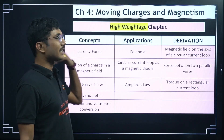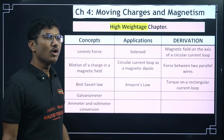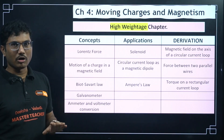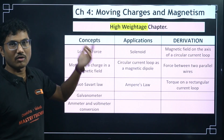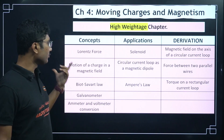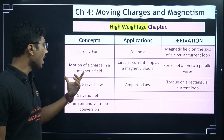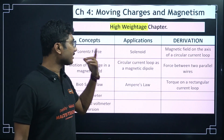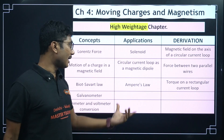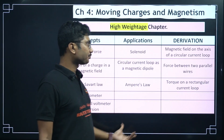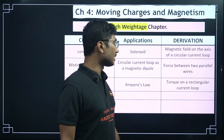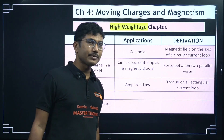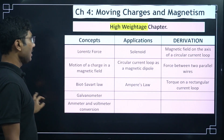Moving Charges and Magnetism is also a high-weighted chapter, but generally no 5-mark numerical comes from it — any numerical that does appear will be a short 3-marker. Important concepts: Lorentz force, motion of a charge in a magnetic field, Biot-Savart law, galvanometer, and ammeter and voltmeter conversion. Application and derivation topics include: solenoid, circular current loop as a magnetic dipole, Ampere's law, magnetic field on the axis of a circular current loop, force between two parallel wires, and torque on a rectangular current loop.